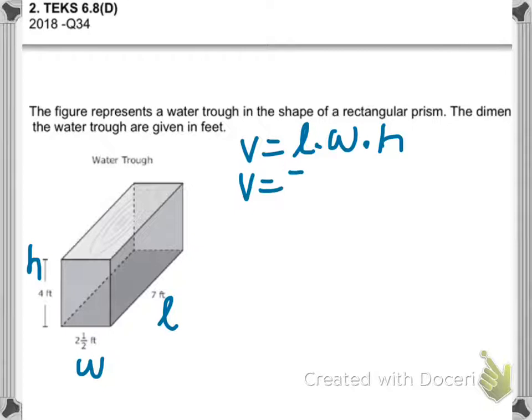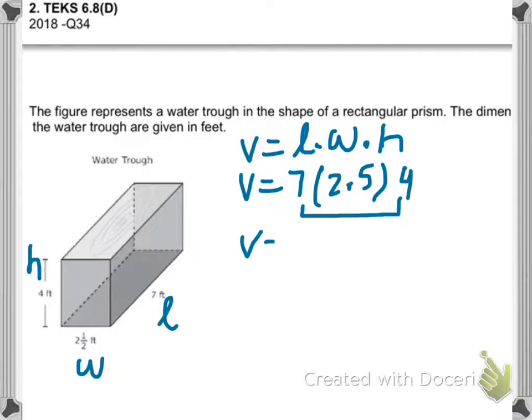Now substitute the numbers into the formula, then choose to multiply the easiest numbers first. Seven times four is twenty-eight. Then you narrow it down to multiply twenty-eight times two point five.